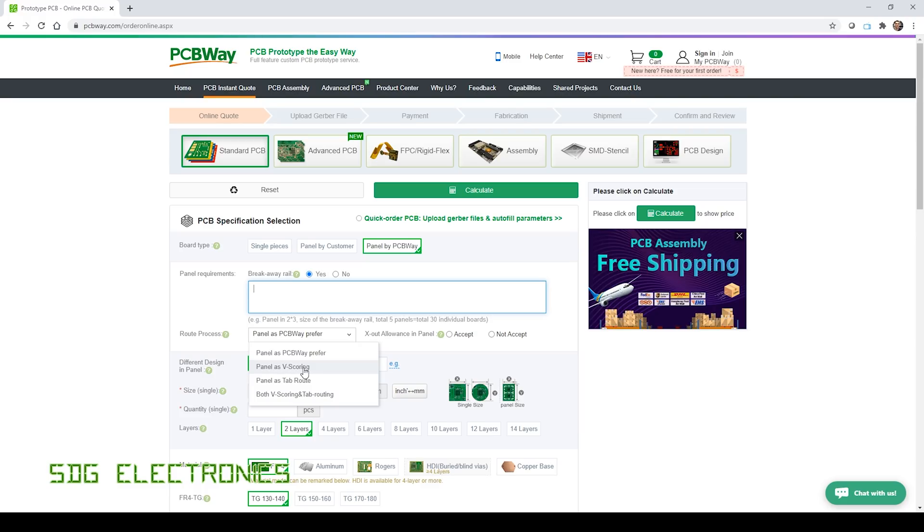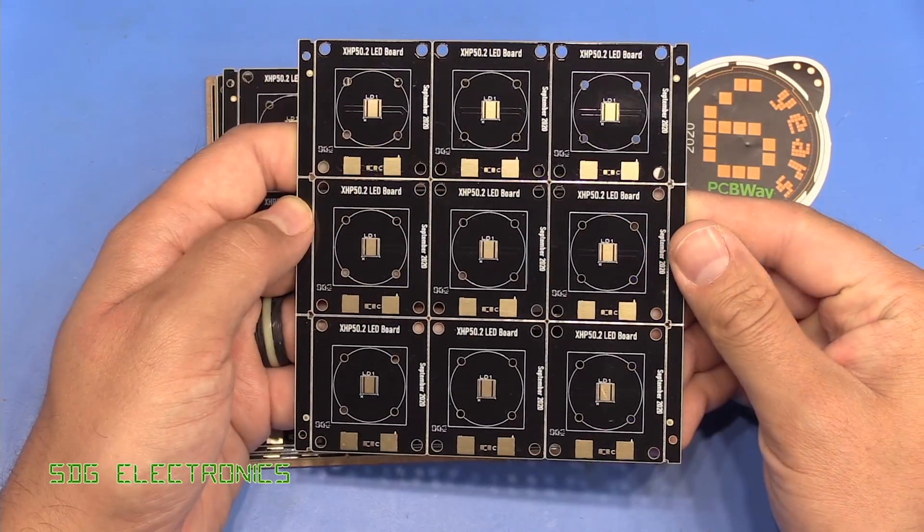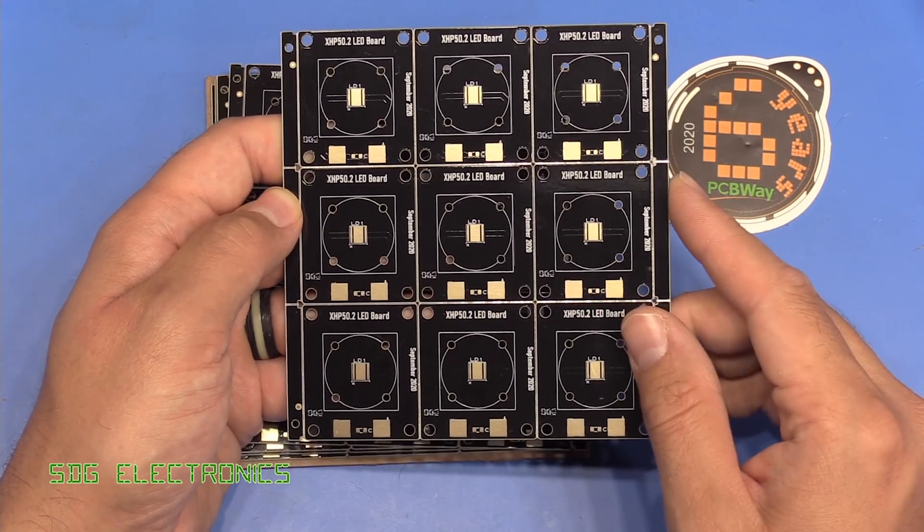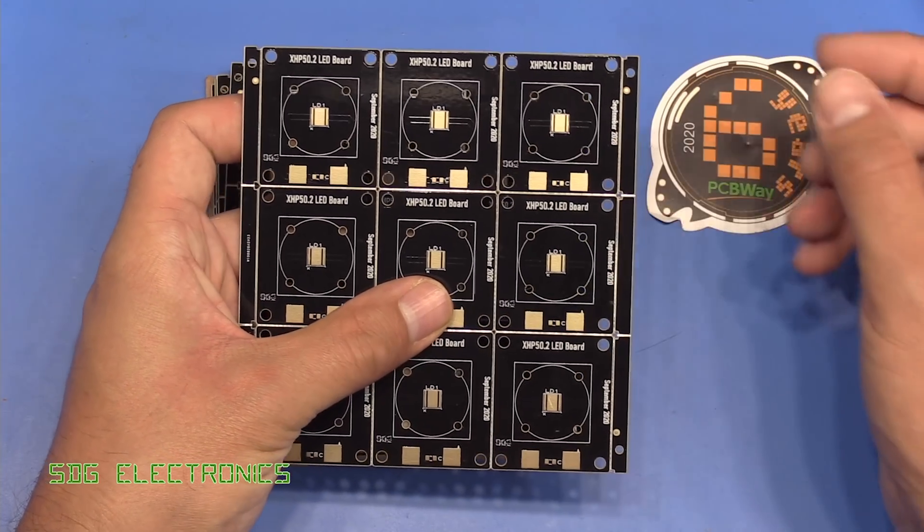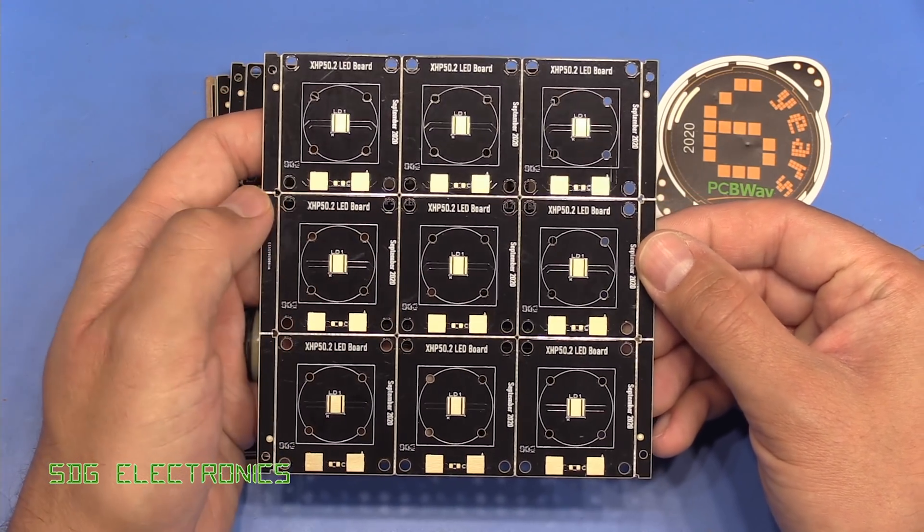You would want at least V scoring on a metal clad PCB, and possibly V scoring and tab routing, so that you can actually physically break away the metal clad PCB. What we did on this design is use the V scoring route. We should be able to wiggle these panels away, and that will leave us with the individual PCBs.